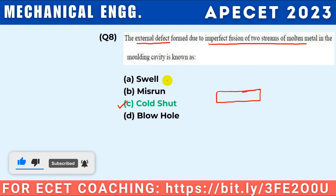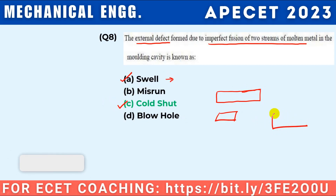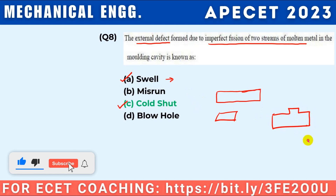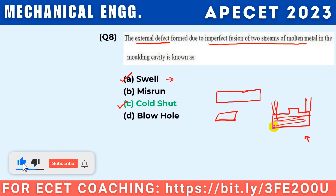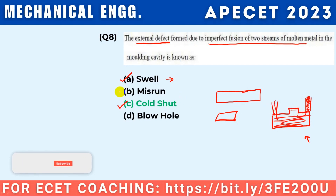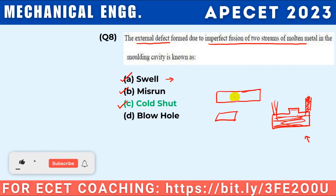What is swelling? Swelling is enlargement of the casting or the mould cavity. We have sprue and riser when we have molten metal in the mould cavity. Blow hole — due to entrapment of atmospheric gases — that is an internal defect. Blow hole is an internal defect.